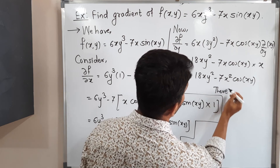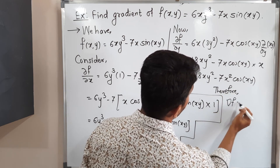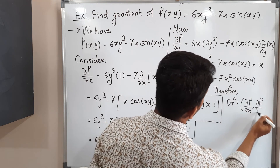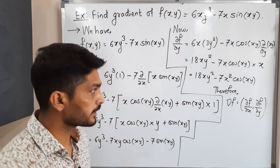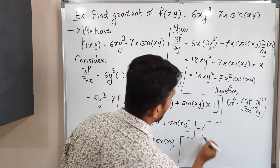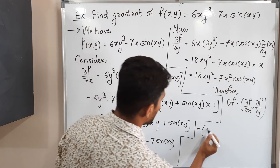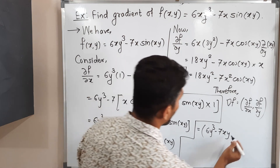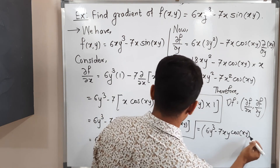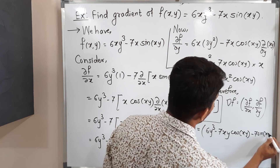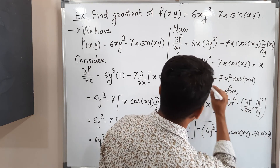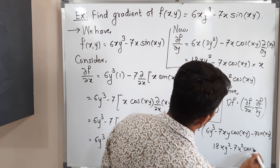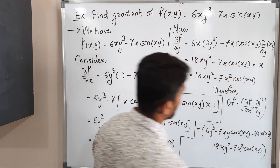Therefore, the gradient ∇f equals (∂f/∂x, ∂f/∂y). Both values have already been calculated. Putting those values in: ∇f = (6y³ − 7xy cos(xy) − 7 sin(xy),  18xy² − 7x² cos(xy)). This is the required answer.